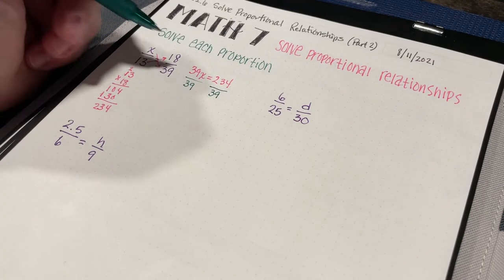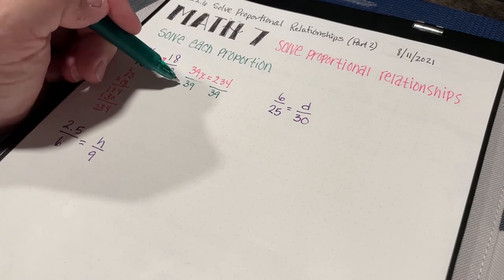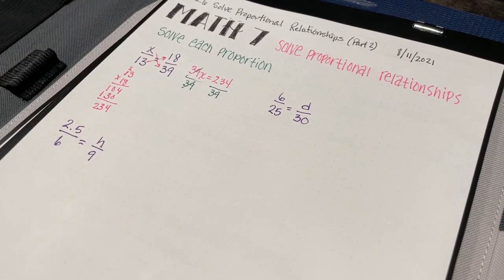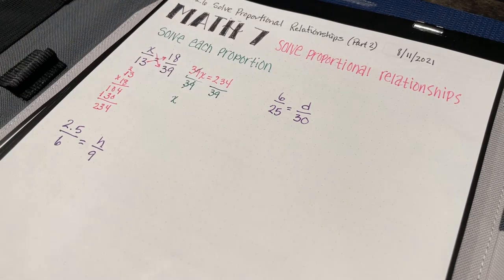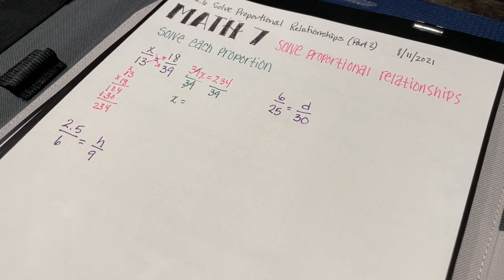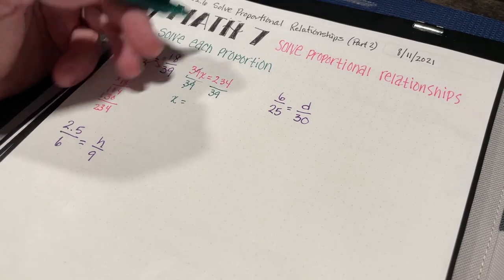When I divide 39x by 39, the 39 divided by 39 is just 1, so I have x equals something. I'm thinking it might be 6 — that's my guess. Let's see if that's really true.